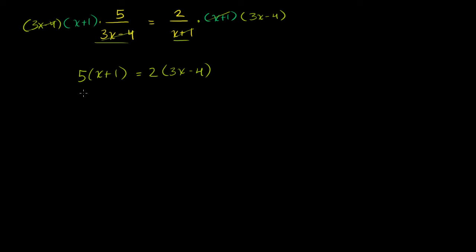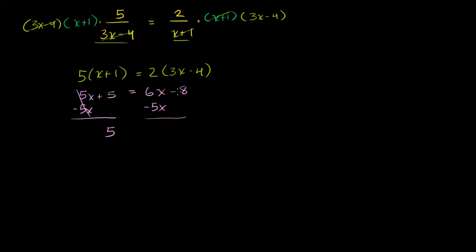The left-hand side becomes 5x plus 5 — just distribute the 5 — is equal to 6x minus 8. Now we subtract 5x from both sides: the left-hand side just becomes 5, and the right-hand side we are left with x minus 8. Now we add 8 to both sides: the left-hand side becomes 13, the right-hand side is just x. So x is equal to 13.